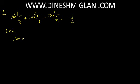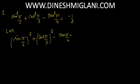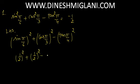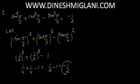We know sin squared pi by 6 is (sin pi by 6)², plus (cos pi by 3)², minus (tan pi by 4)². Now sin pi by 6 is sin 30° = 1/2. So (1/2)² plus cos pi by 3 is cos 60° = 1/2, so (1/2)², minus tan 45° = 1. This gives 1/4 + 1/4 − 1 = 1/2 − 1 = minus 1 by 2. Hence, the answer is minus 1 by 2.